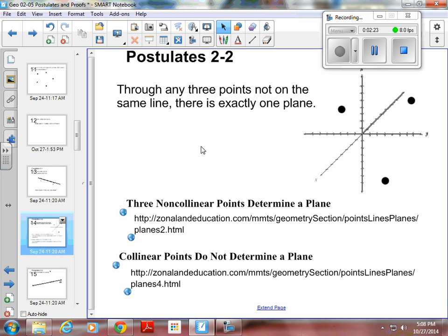So there's postulate 2-2. Three points determine a plane is what we say. So exactly one plane goes through those three points. And this goes back to that stool thing I was talking about. If you have a three-legged stool, it will not wobble because those three bottoms of the three legs will make a flat surface. So it can't wobble.